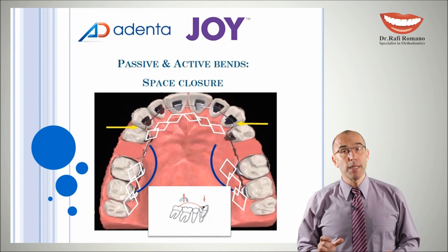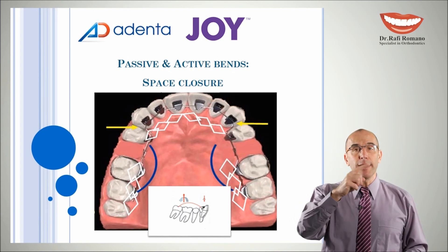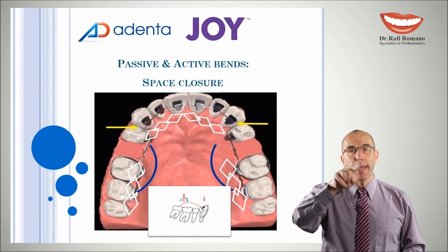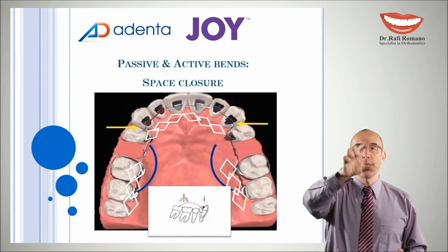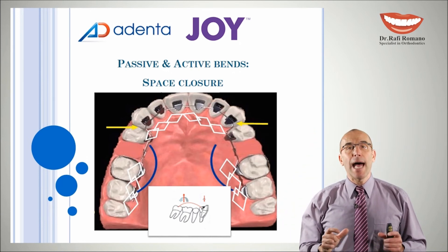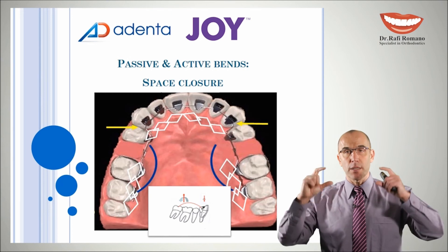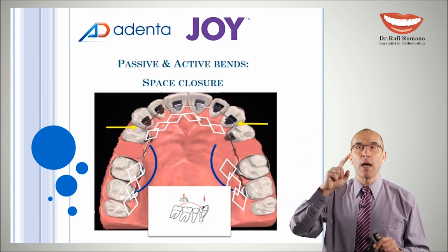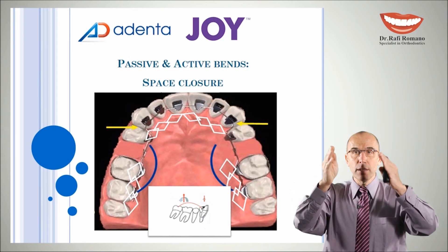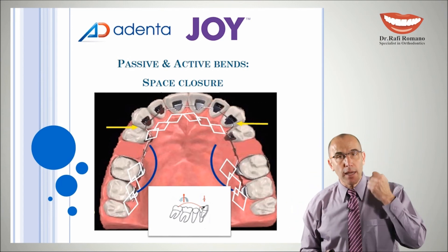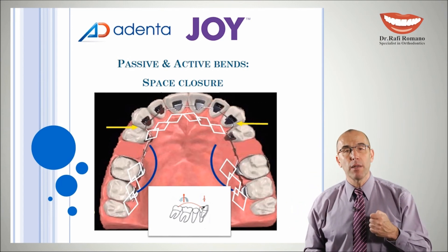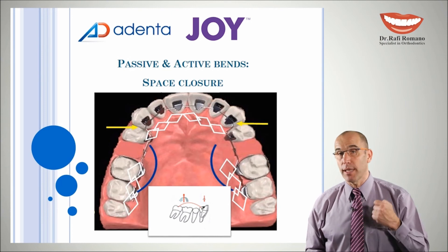How we stabilize the segments? We take metal ligature and we create figure 8 around all these 3 segments. After we have done all these 3 segments, we are doing the wire which is usually a rectangular stiff wire like 16 by 22 stainless steel.